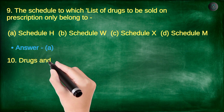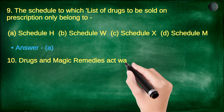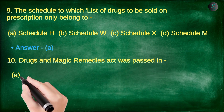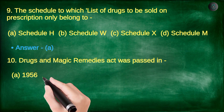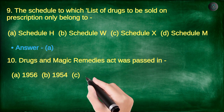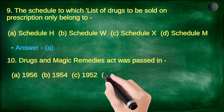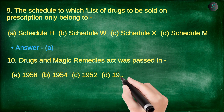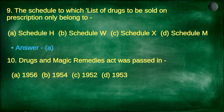Next question. The Drugs and Magic Remedies Act was passed in: A. 1956, B. 1954, C. 1952, D. 1953.